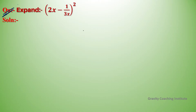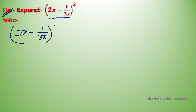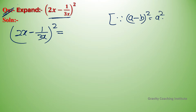The question is to expand (2x − 1/3x)². To expand this, let me use the identity: (a − b)² = a² − 2ab + b².